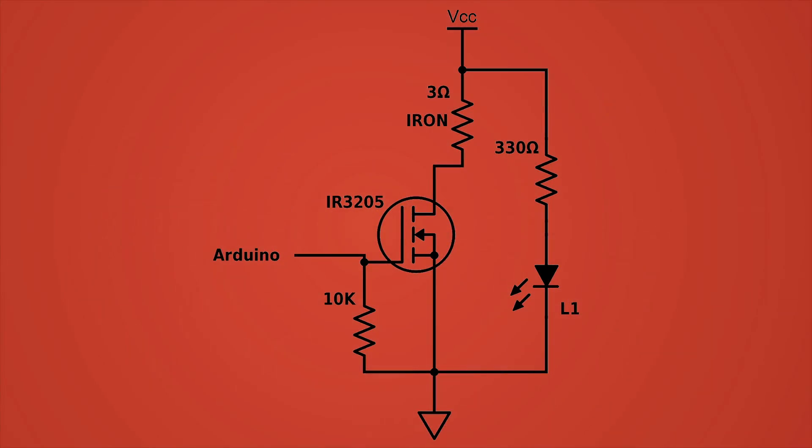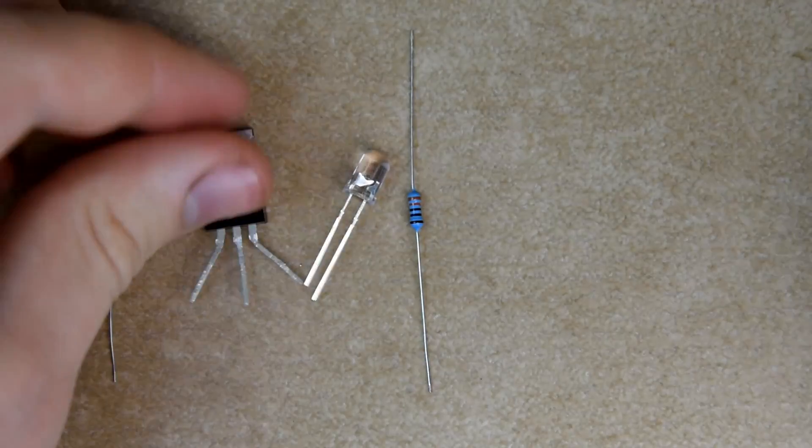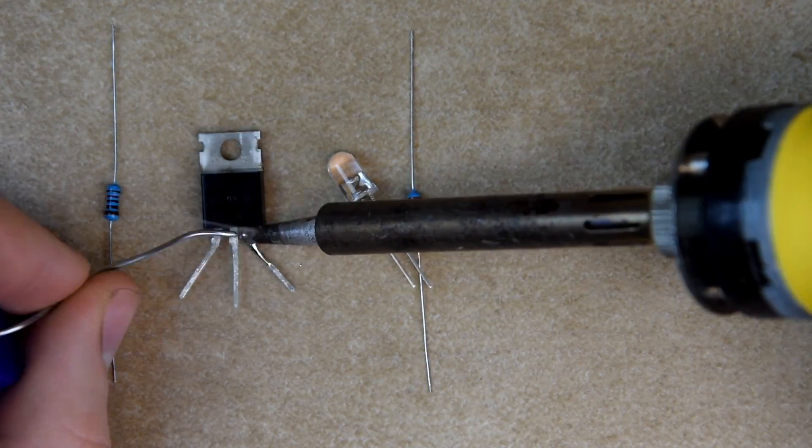Now let's make the switching part. The components are connected as on this schematic. First, we bend the outer pins of the MOSFET in order to get more working space and thin them to make further soldering easier.